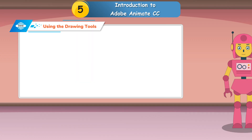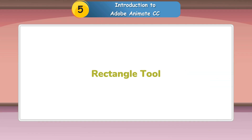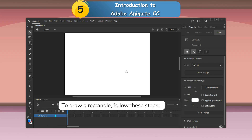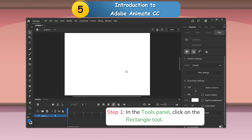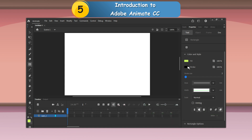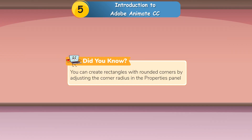Using the Drawing Tools. Rectangle Tool: The Rectangle Tool allows you to draw rectangles and squares. To ensure a perfect square, hold the Shift key while dragging the tool. To draw a rectangle: Step 1 — In the Tools panel, click on the Rectangle Tool. Step 2 — In the Properties panel, select the desired Stroke Color, Fill Color, Stroke Size and Stroke Style. Step 3 — Click and drag the mouse on the stage, then release the mouse button to complete the shape. You can also create rectangles with rounded corners by adjusting the corner radius in the Properties panel, or create an ellipse or circle using the Oval Tool.